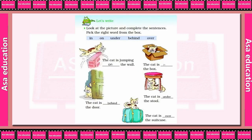Let's write. Look at the picture and complete the sentence. Pick the right word from the box: in, on, under, behind, and over. The cat is jumping on the wall. The cat is in the box. The cat is behind the door. The cat is under the stool. The cat is over the suitcase.